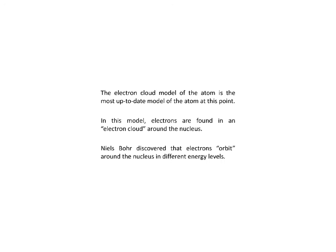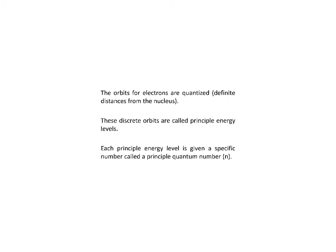These notes are on electrons and atoms. The electron cloud model of the atom is the most up-to-date model of the atom. In this model, electrons are found in an electron cloud around the nucleus. Niels Bohr discovered that electrons orbit around the nucleus in different energy levels. The orbits for electrons are quantized — meaning they're a definite distance from the nucleus. These discrete orbits are called principal energy levels.